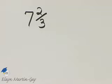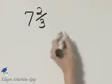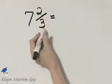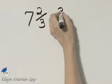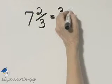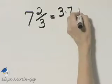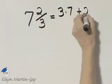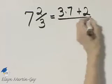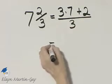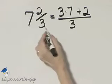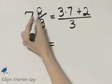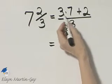Let's write this mixed number as an improper fraction, and remember how we do so. It's 3 times 7 — I'll go ahead and write it down this time — plus the numerator of 2, all over the original denominator. The denominator does not change. So 3 times 7 plus 2, all over 3.